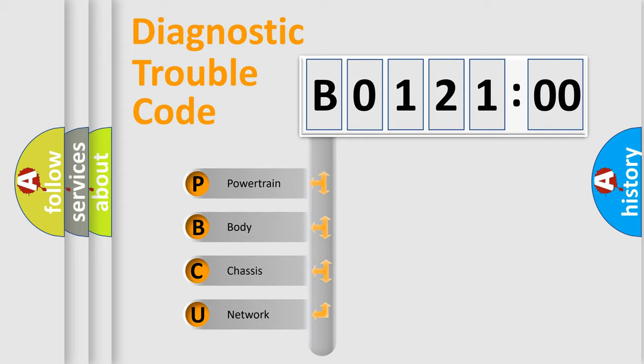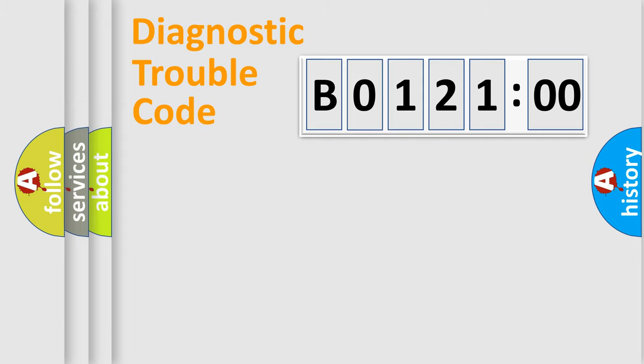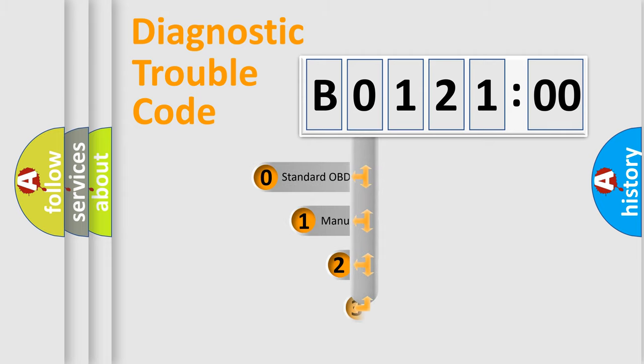We divide the electric system of automobiles into four basic units: Powertrain, Body, Chassis, and Network. This distribution is defined in the first character code.